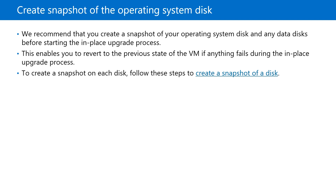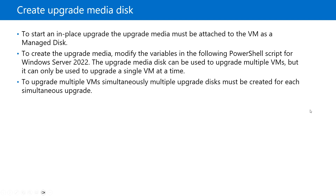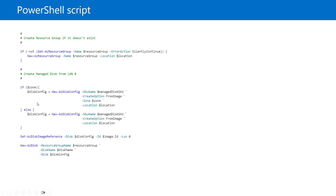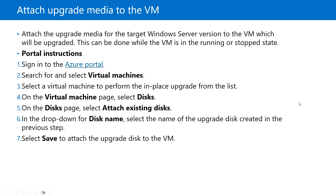Before starting the in-place upgrade, it is recommended to create a snapshot of the operating system and then proceed. We will be creating an upgrade media disk for the relevant upgrade platform that we want, and we will be using that upgrade media disk to migrate the server.